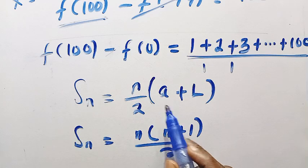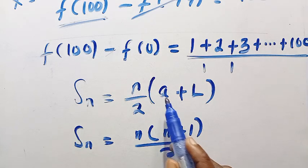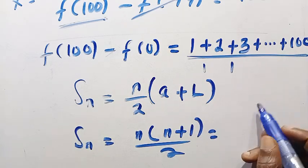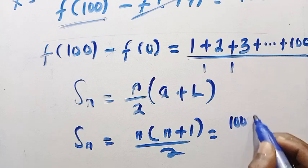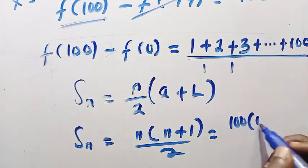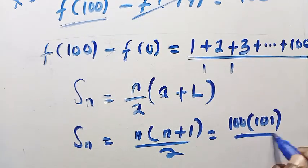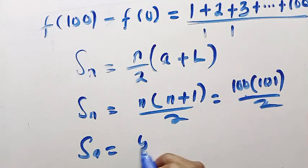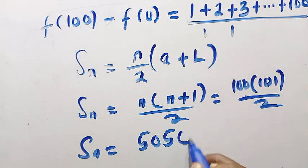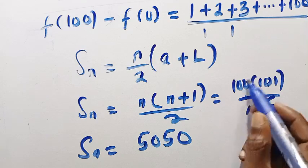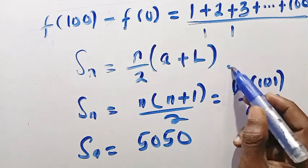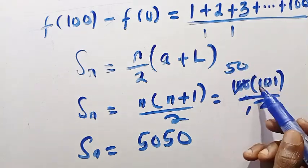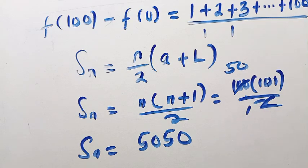100 multiplied by 100 + 1, that is 101, then divided by 2. Looking at this, we are going to have Sn as 5050. Dividing by 2 here gives us 50, and we multiply 50 by 101, we get 5050.